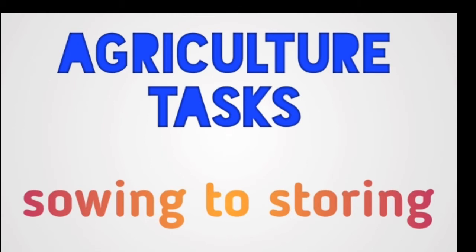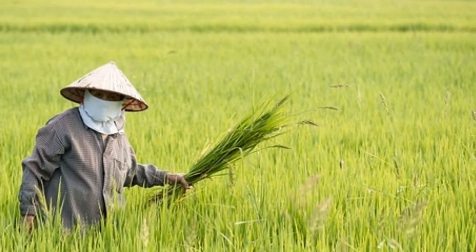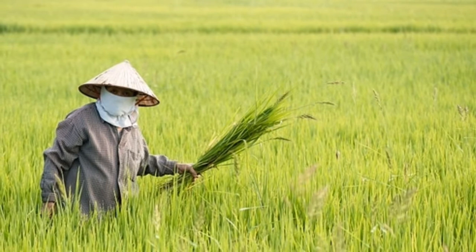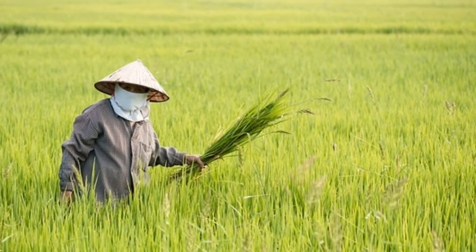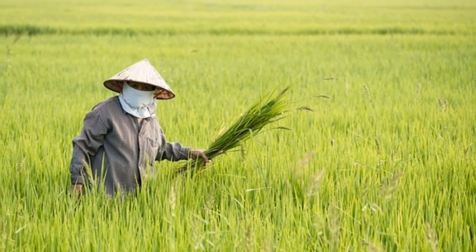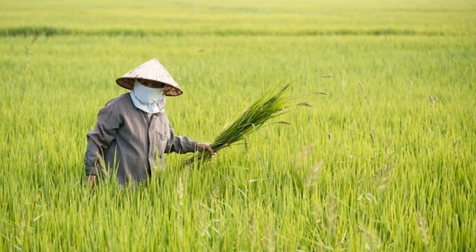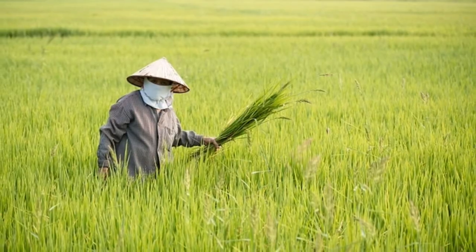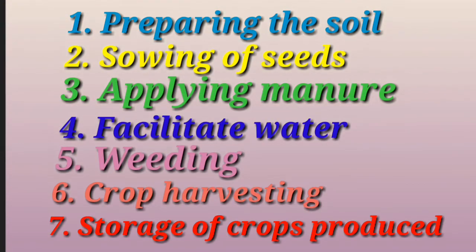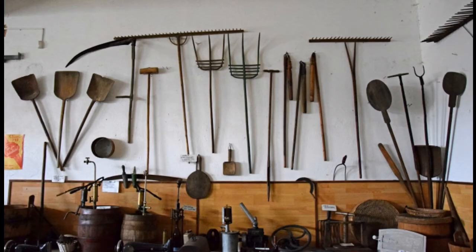The cultivation of paddy involves a series of activities. You will now learn about the agriculture practices to be followed from time to time and their methods in general. Many crops are cultivated in the same way, but some crops need special methods. The key steps are: preparing the soil, sowing of seeds, applying manure, irrigation, weeding, crop harvesting, and storage of crops. Agriculture practices are carried out using either manpower or special tools.